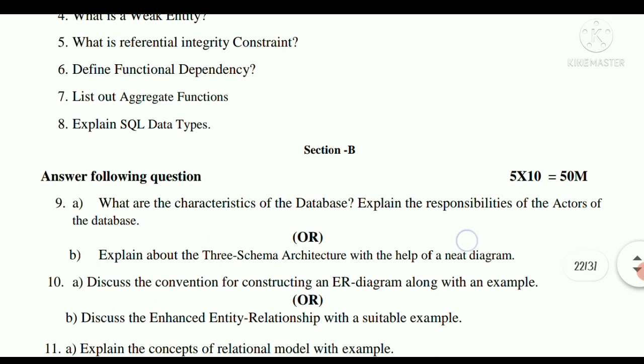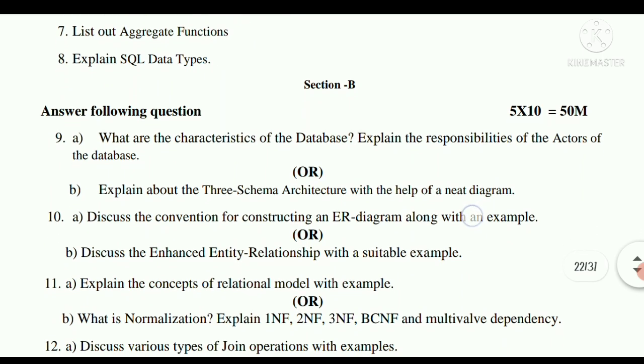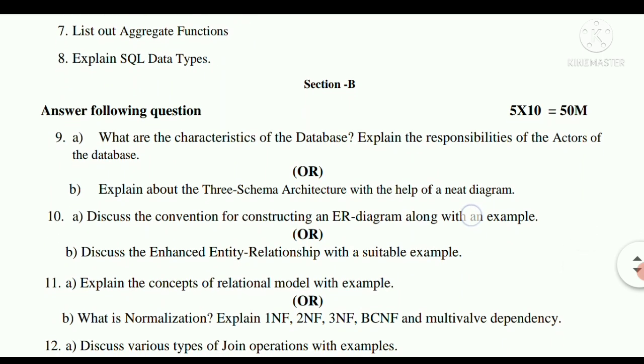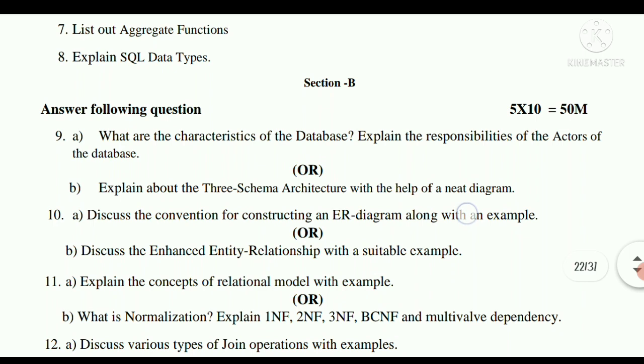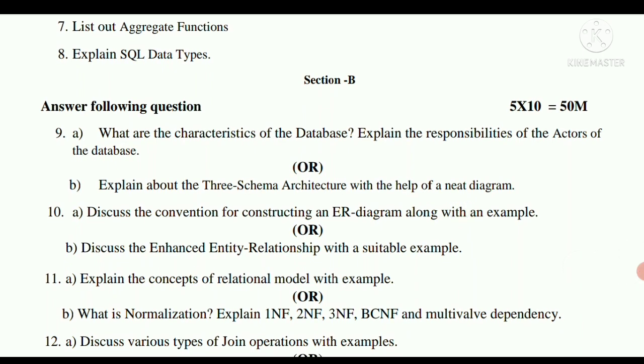And tenth, discuss the convention for constructing an ER diagram along with an example. B, discuss the enhanced entity relationship with a suitable example. Eleventh a, explain the concept of relational model with an example. Eleventh b, what is normalization? Explain 1NF, 2NF, 3NF, BCNF and multivalued dependency.